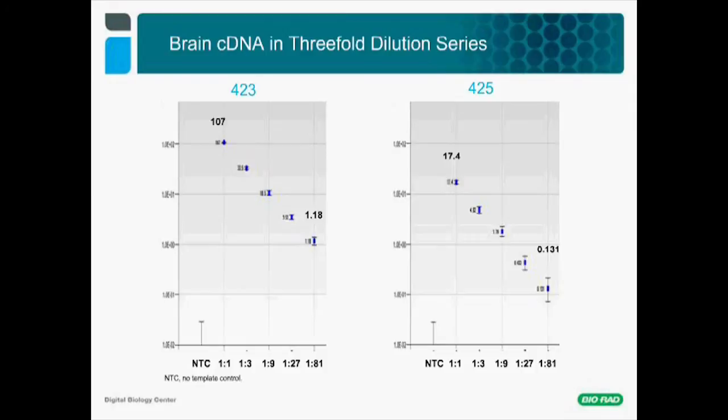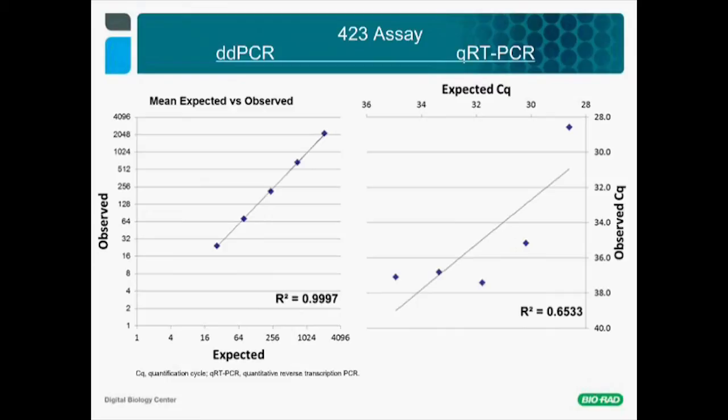The same assays were used in both ddPCR and qPCR to detect miRNA 423 along a dilution curve. The ddPCR results line up perfectly according to their expected values, providing an excellent regression value—the R-squared is about 0.9997. By contrast, qRT-PCR has a less-than-ideal alignment, as well as a much lower level of linearity—in this case, 0.6533.